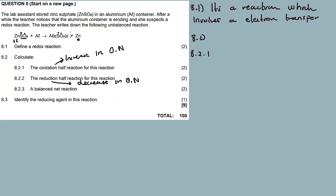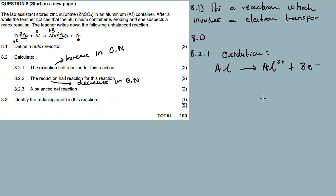The oxidation number doesn't change for oxygen, and SO₄ doesn't change either, making SO₄ a spectator ion. For aluminum: it's zero on the left and plus three on the right — there's an increase in oxidation number, so that is oxidation. So the oxidation half reaction is for aluminum. Aluminum loses three electrons.